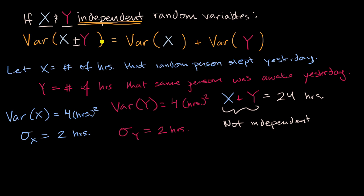So if we just tried to blindly apply this expression, this claim we had, without thinking about the independence, we would try to say that the variance of X plus Y must be equal to the sum of their variances, so it would be four plus four, equal to eight hours squared.